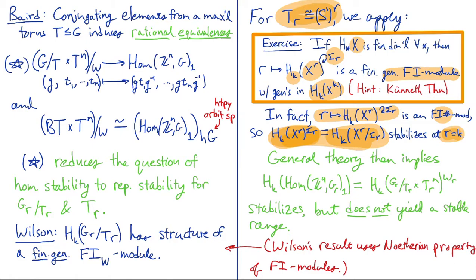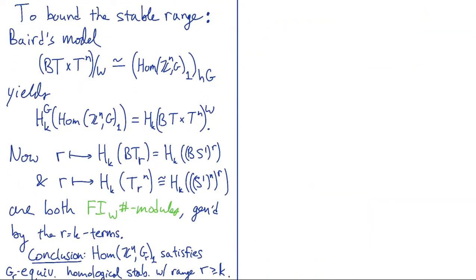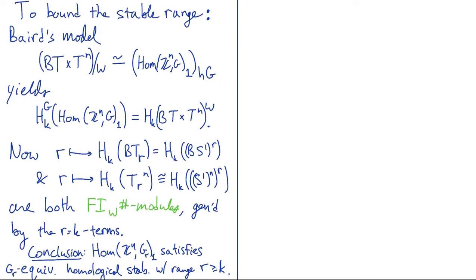So the general theory of FI modules then tells you that you can combine these pieces to find that the homology of these Hom spaces stabilizes, but you don't get a stable range this way. And the reason basically is that in proving this result here, Wilson uses a Noetherian property of FI modules, and that's saying, you have some finitely generated FI module and a submodule. The submodule is also finitely generated, but you lose control over where the generators live. So if you want to get bounds on the stable range, you need to do something else. And so I want to say a little bit about what that is that we do.